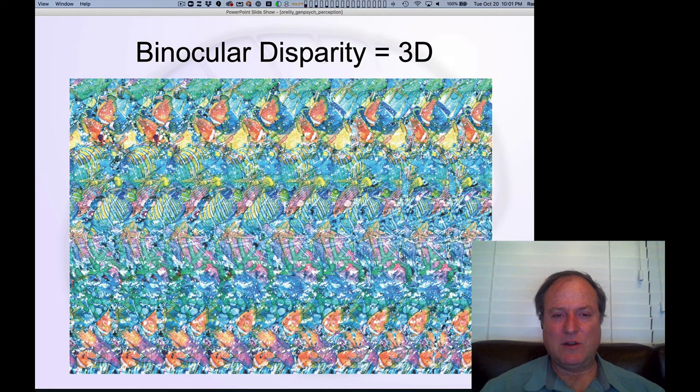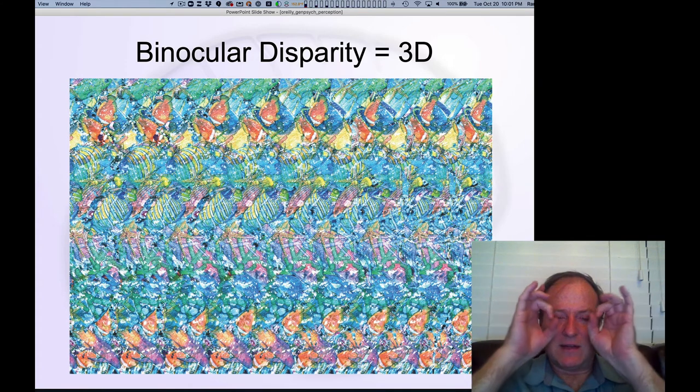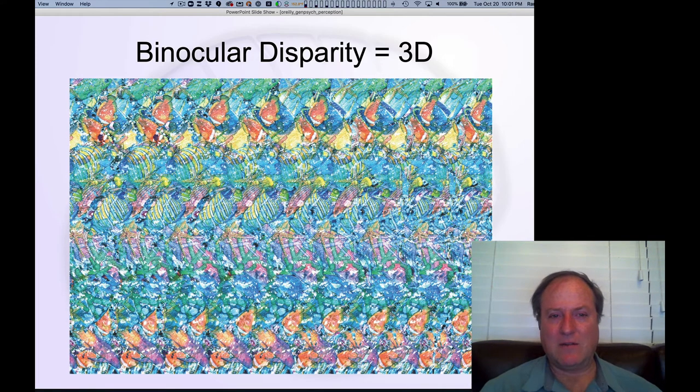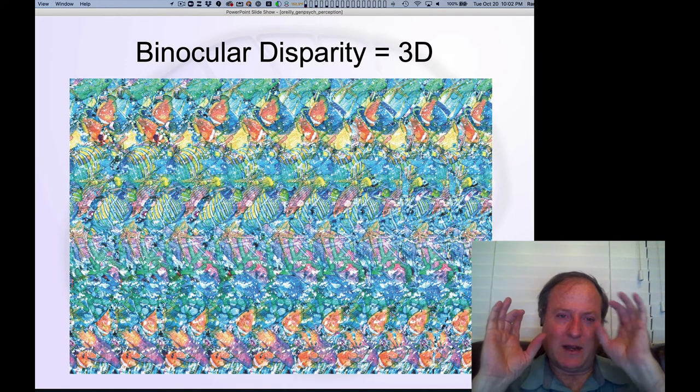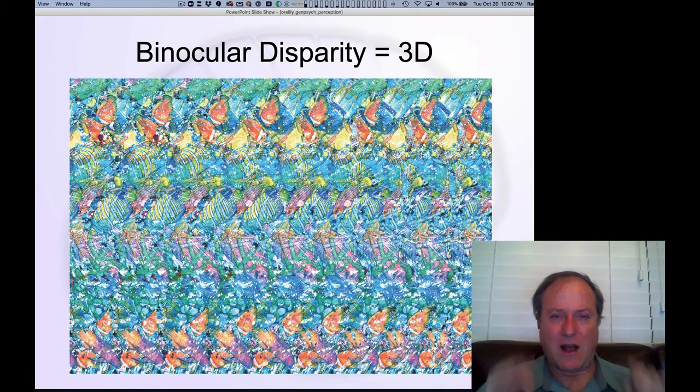And these 2D stereograms, auto stereograms, allow us to see these 3D disparity driven images without even having to have separate images presented to the two eyes. And so standard 3D movies, if you have those 3D glasses, the whole point of those is that they allow you to put one image on one eye and another image on the other eye. And those disparities, those differences, those offsets between the images on those two eyes is how we primarily see depth information.